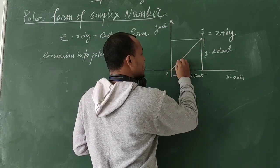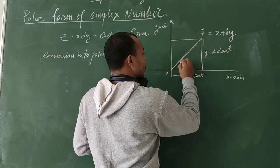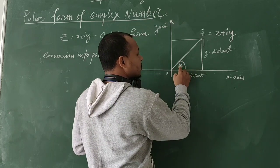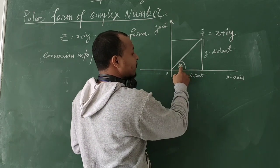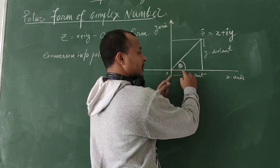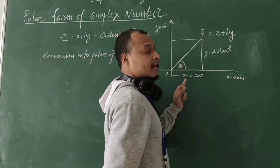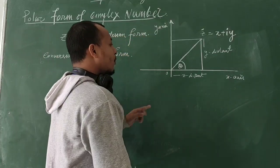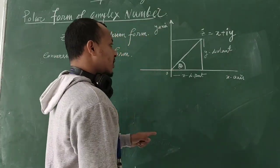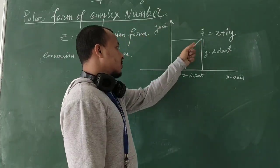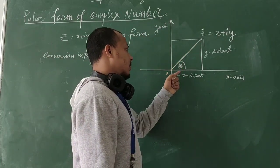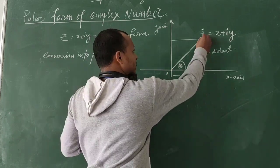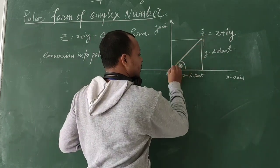In polar form we need this distance R and the angle θ. This angle is the angle of inclination with respect to the X axis. We are going to form it using a right angle triangle.